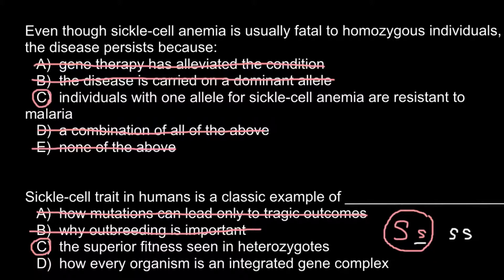The normal genotype — capital S, capital S, or homozygous dominant — would not protect a person from malaria. But this genotype would be superior in any other region except central Africa, where malaria is present. So our choice is C. The last answer, D, how every organism is an integrated gene complex, is also incorrect, so we have to cross out that answer.